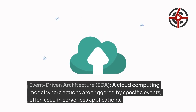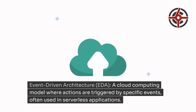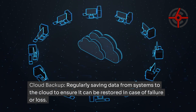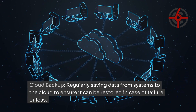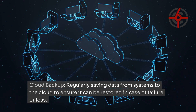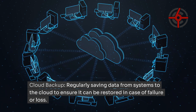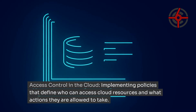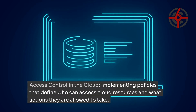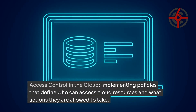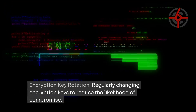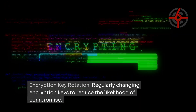Event-Driven Architecture (EDA): a cloud computing model where actions are triggered by specific events, often used in serverless applications. Cloud Backup: regularly saving data from systems to the cloud to ensure it can be restored in case of failure or loss. Access Control in the Cloud: implementing policies that define who can access cloud resources and what actions they are allowed to take. Encryption Key Rotation: regularly changing encryption keys to reduce the likelihood of compromise.